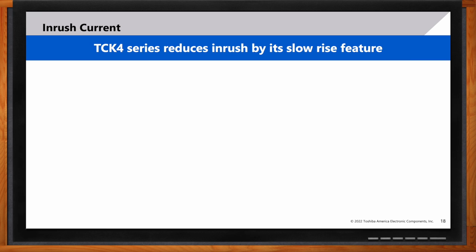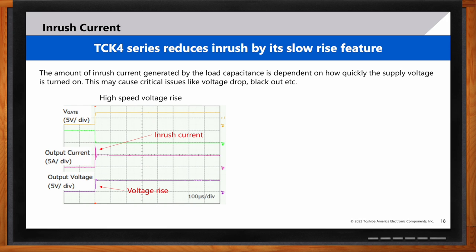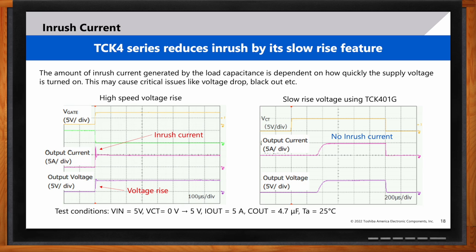Another benefit of the Toshiba TCK4 series is inrush or surge current control. Inrush current is usually caused when there is a voltage spike and it can damage components. The TCK4 series has a built-in slew rate control allowing for a slower rise. Comparing the left figure without slew rate control — which shows a fast turn-on causing high inrush current and an irregular output voltage — versus the right figure with slew rate control, which shows a smooth curve and well-regulated output voltage. This inrush current consideration is crucial and many design engineers don't consider it until late in prototyping.